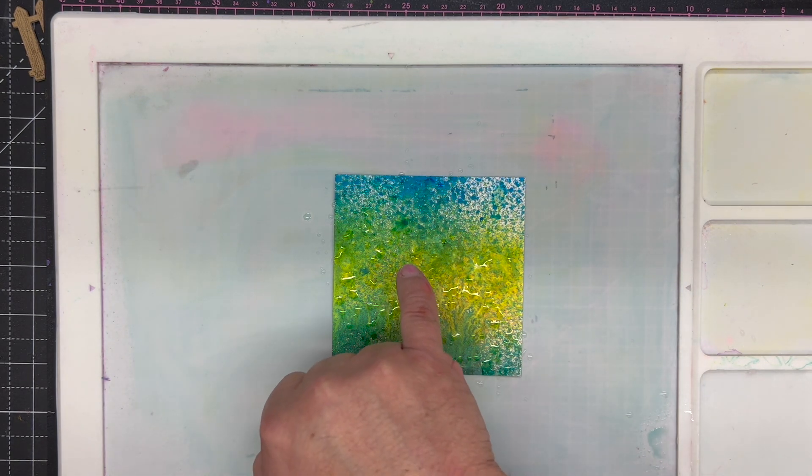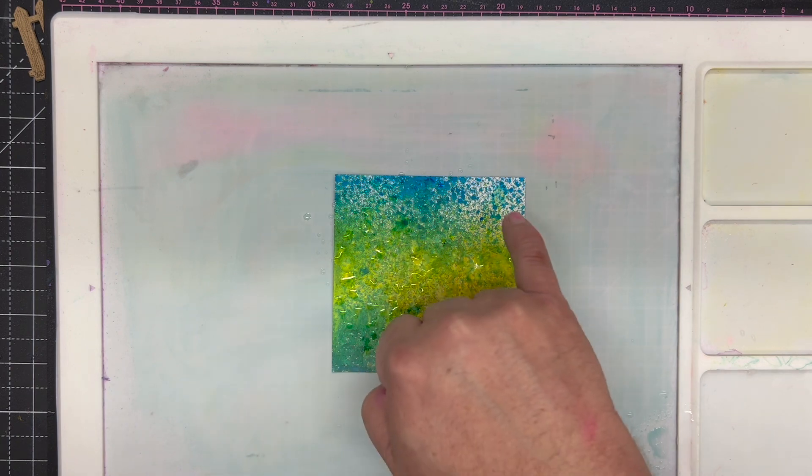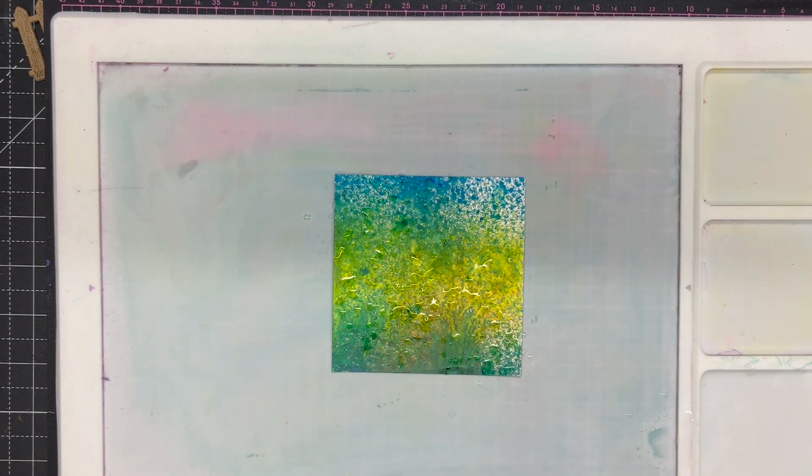You'll start to see that the color is bleaching and pulling into the water. The water will pull out the pigment that's inside these sprays.